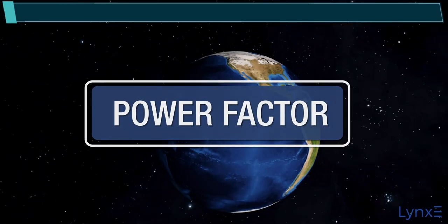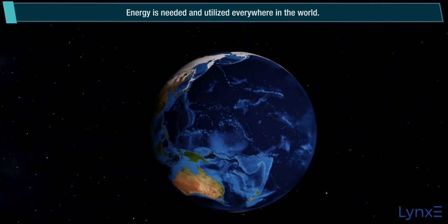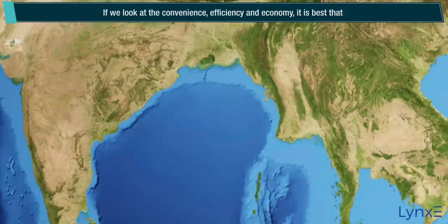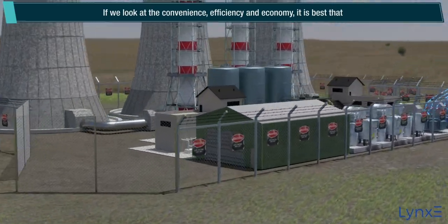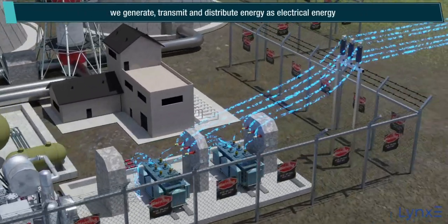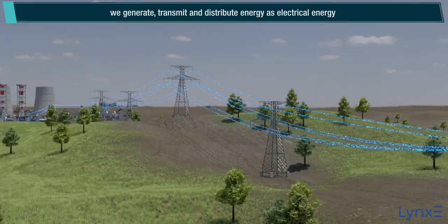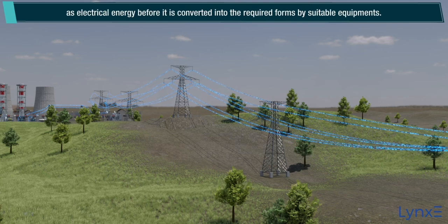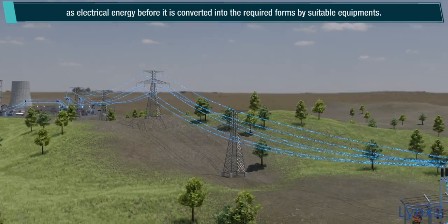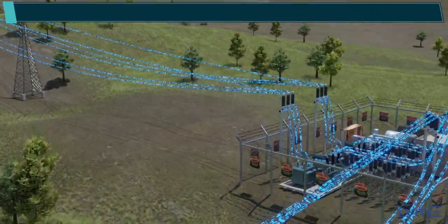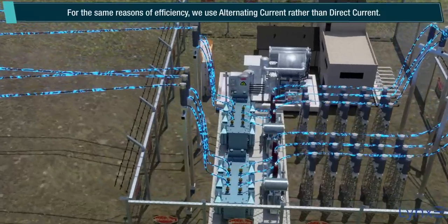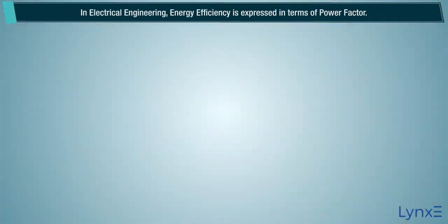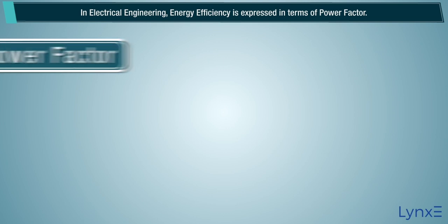Power Factor. Energy is needed and utilized everywhere in the world. If we look at the convenience, efficiency, and economy, it is best that we generate, transmit, and distribute energy as electrical energy, before it is converted into the required forms by suitable equipment. For the same reasons of efficiency, we use alternating current rather than direct current. In electrical engineering, energy efficiency is expressed in terms of Power Factor.